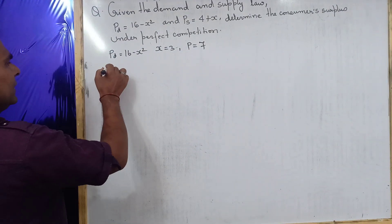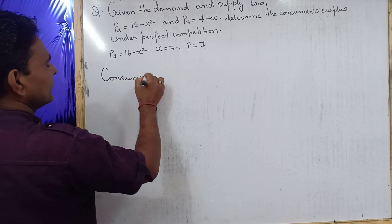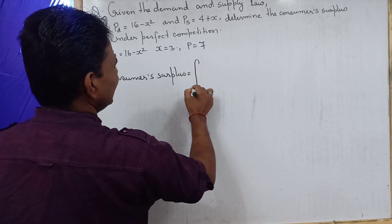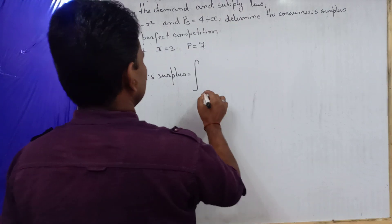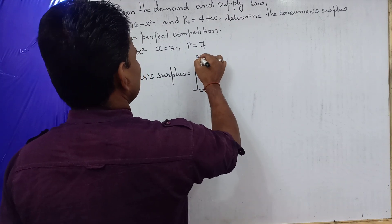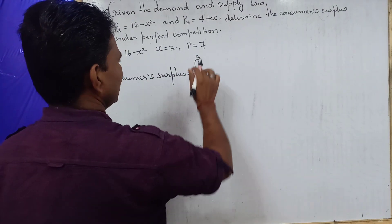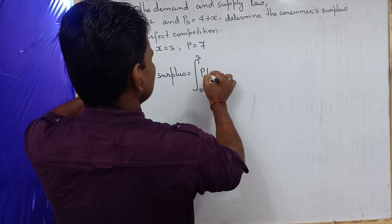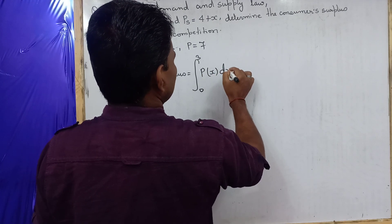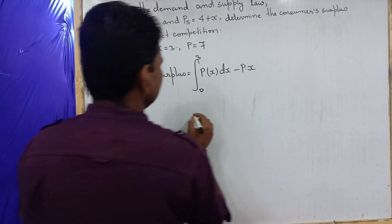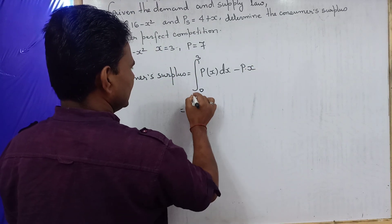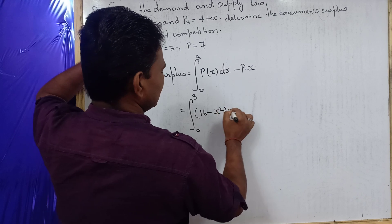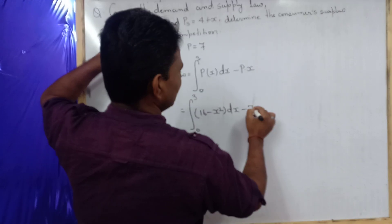We know that consumer surplus equals the integration from 0 to 3 — because we have got x equal to 3 as the upper limit — of the demand function p as a function of x, dx, minus p times x. Substituting: the integral from 0 to 3 of (16 minus x squared) dx, minus p equals 7 times x equals 3, giving minus 21.